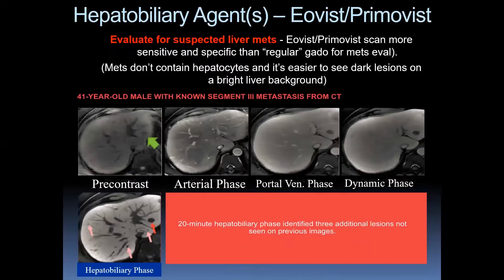Regarding hepatobiliary agents for evaluation of suspected liver mets: mets don't contain hepatocytes, and it's easier to see dark lesions on a bright liver background. Here we have a known metastatic lesion seen on CT: T1 dark, arterial phase heterogeneous enhancement, going hypointense on portal venous phase, staying hypointense on dynamic phase, and even more hypointense on the hepatobiliary phase. We also see three other lesions which turned out to be additional metastatic disease — not easily identified on other imaging sequences.